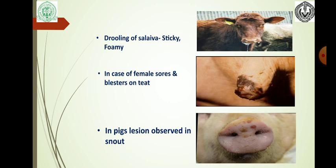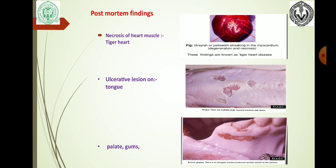Other signs include drooling saliva. In FMD, the saliva is streaky and foamy. In case of females, sores and blisters are on the teats. In pigs, lesions are observed on the snout. Post-mortem findings include necrosis of heart muscle called tiger heart, with grayish and yellow streaking in the myocardium. There are multiple large mucosal erosions and ulcers on the tongue, palate, and gums.